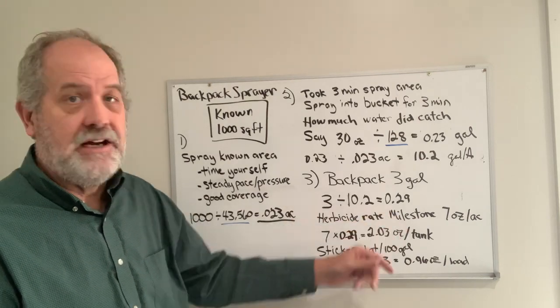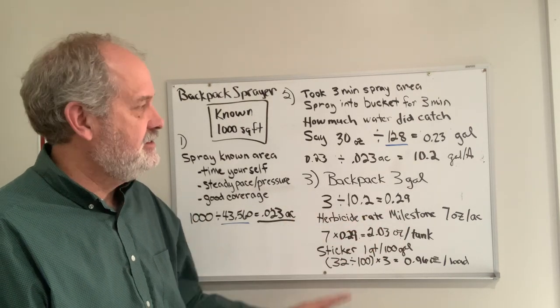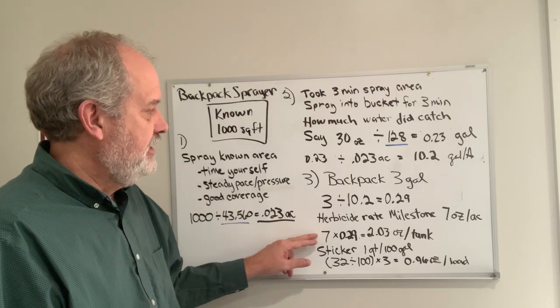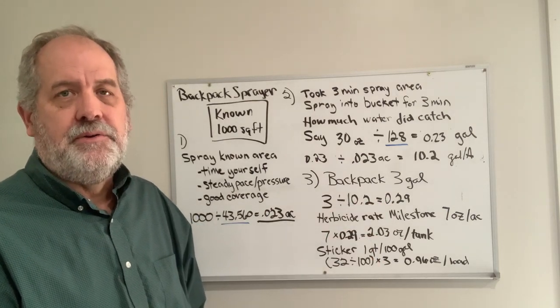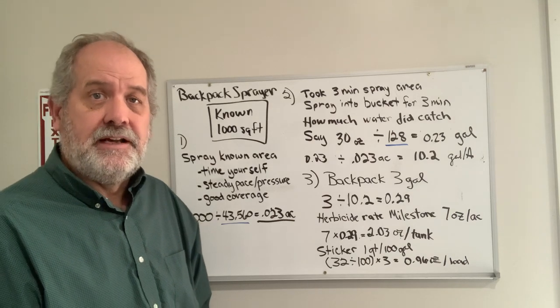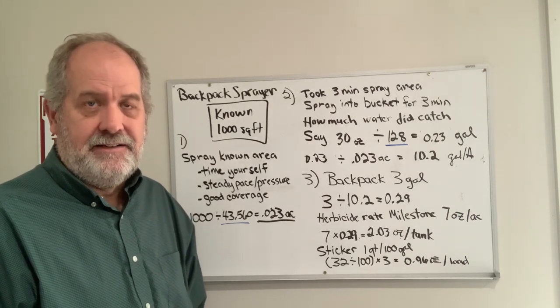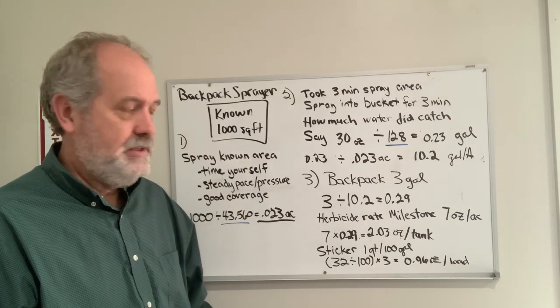An herbicide, Milestone, is commonly used in backpacks. It's a 7 ounce per acre rate. Seven times 0.29 acres, you would put 2.03 ounces in a 3 gallon backpack. That's how much chemical you would use.